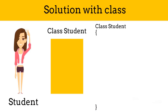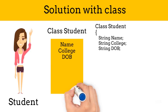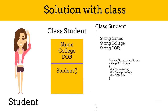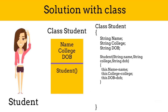Variables in a class represent the properties of that class. For the Student class, we will have variables or properties like name, college name, and date of birth. Now we have to define the constructor for setting the values of these variables. Constructor is used to initialize the variables of a class. The constructor name is the same as the class name but it doesn't have a return type. We will see the constructor in detail in a separate video.